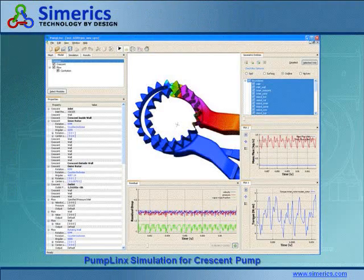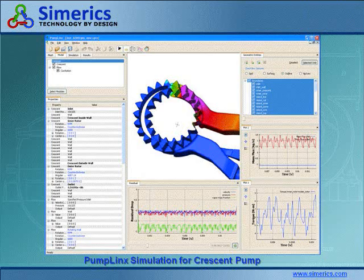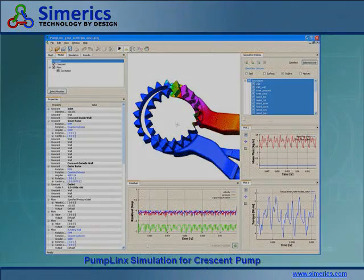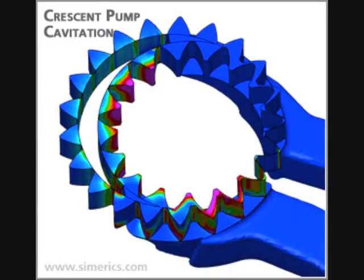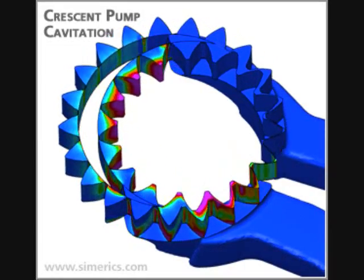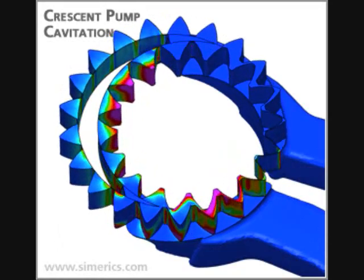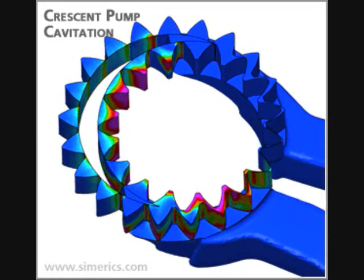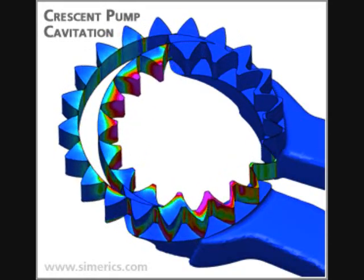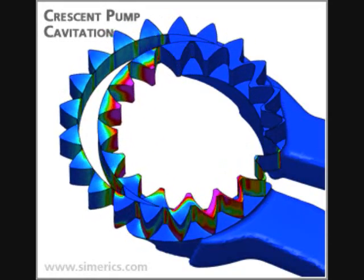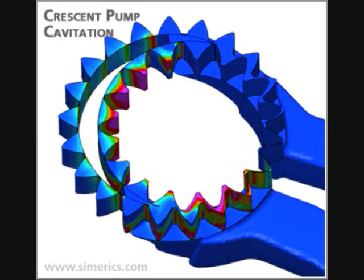The result is more than a simple cartoon or colorized fluid dynamics. The data and animations produced by Pumplinks typically match real test data to within 5% without any calibration. The type and extent of the data produced are the same as would be generated by a well-instrumented hardware test with extensive flow visualization.